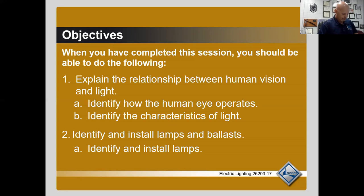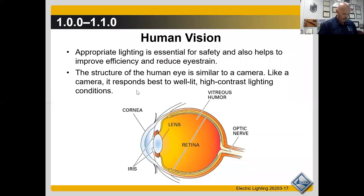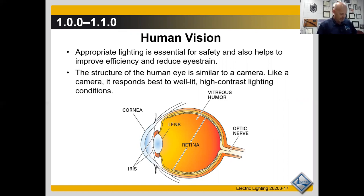Electric lighting is used extensively throughout residential structures, commercial businesses, industrial plants, and outdoor sites. Its use in residential structures can create ambience and provide illumination for various tasks.